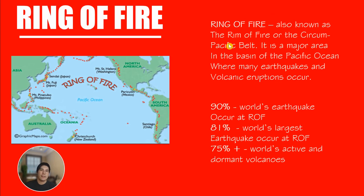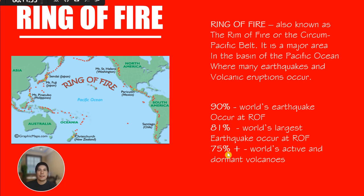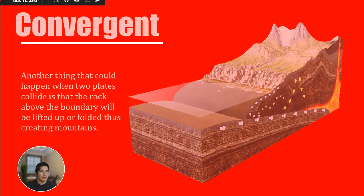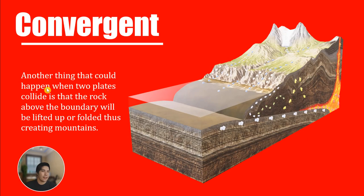The Ring of Fire, also known as the circum-Pacific belt, is the major area in the basin of the Pacific Ocean where many earthquakes and volcanic eruptions occur. 90% of the world's earthquakes and 81% of the world's largest earthquakes occur at the Ring of Fire, and 75% of the world's active volcanoes are located here. Another thing that can happen when two plates collide is that the rock above the boundary will be lifted up or folded, thus creating mountains.